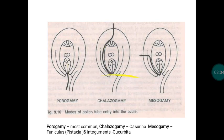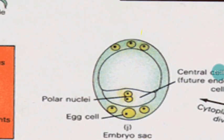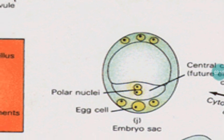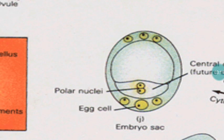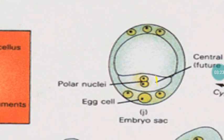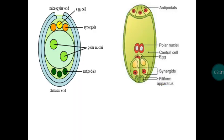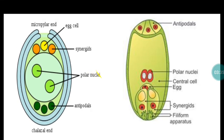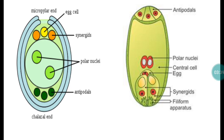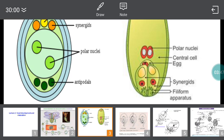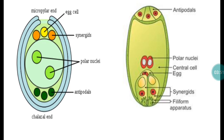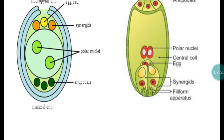It is an eight-nuclei structure, but considering cells it is a seven-cell structure. Three of these cells are known as antipodal cells. The two polar nuclei constitute a single cell. There is one egg cell with two synergid cells on either side. This is the mature embryo sac. Here you can see a clear image: two polar nuclei — two nuclei but one cell — and this is the egg cell.